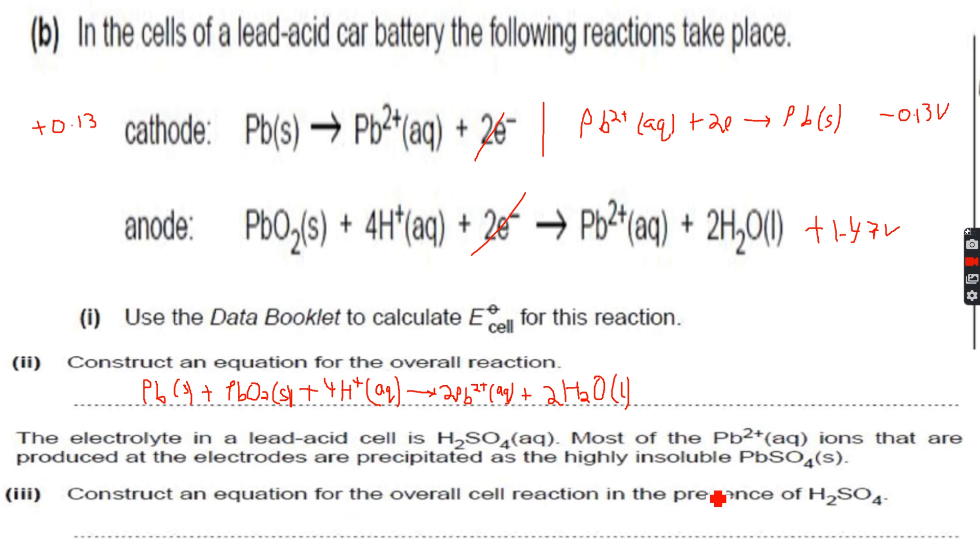Construct an equation for the overall cell reaction in the presence of H2SO4. So this is very simple. We only have to replace the H plus term with H2SO4 because H2SO4 is what is actually providing us those H plus ions for this reaction. So Pb solid plus PbO2 solid plus 2H2SO4 because if we need 4H plus ions, we will need 2H2SO4.